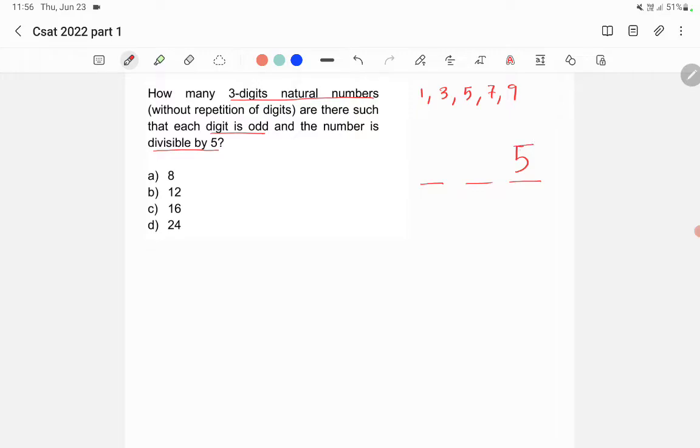So the last number will be 5. Now we have to check the possibilities of all other numbers. 135 is possible, then 175 is possible because I cannot write 155—if I write 155, 5 is repeating. It says without repetition of the digits. So digits like 115, 155 are not possible because there are repetitions of digits. The possible numbers are 135, 175, 195.